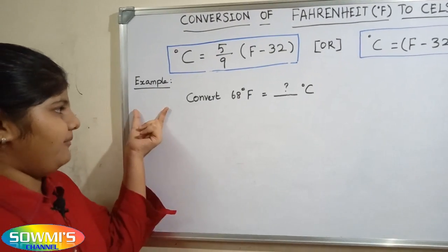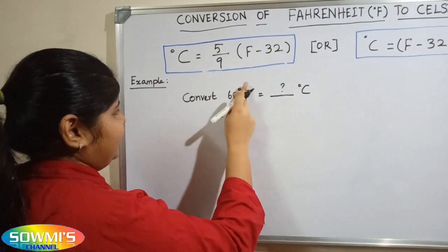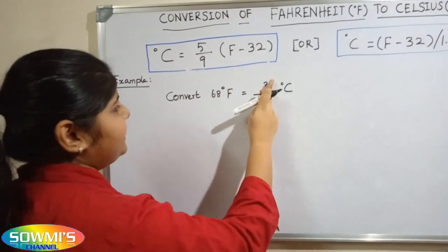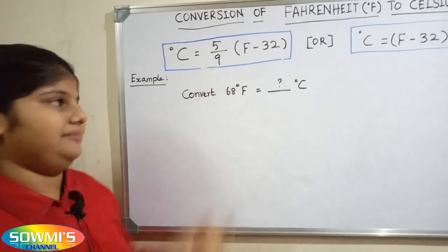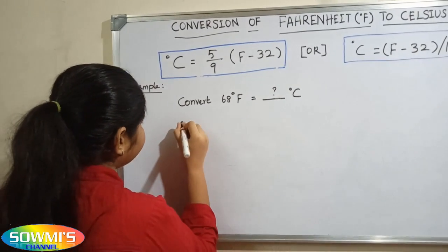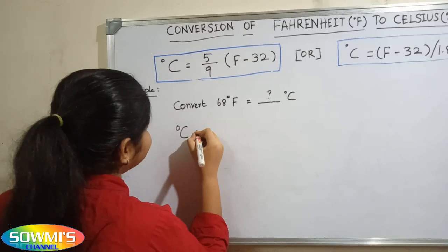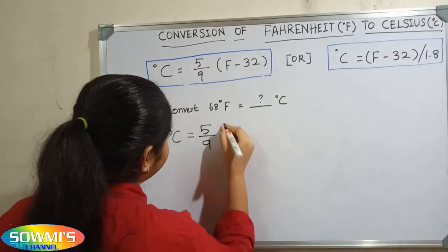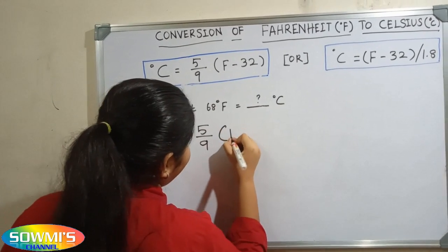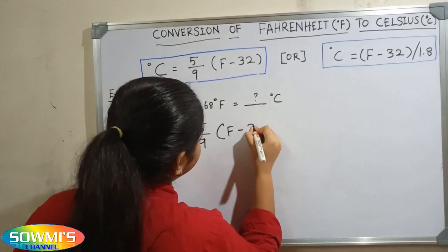For example, convert 68 degree Fahrenheit into degree Celsius. First we will apply this formula. Degree Celsius equals 5 by 9 multiply Fahrenheit minus 32.